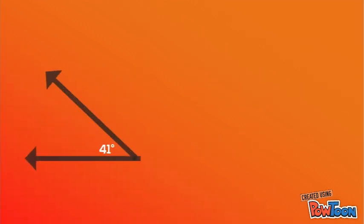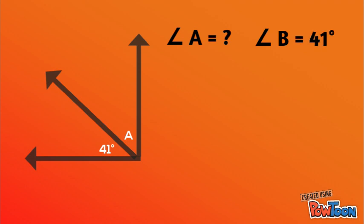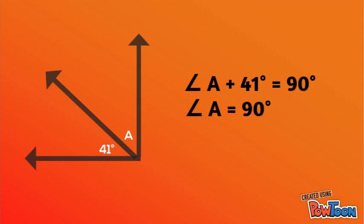Given these two angles, we're going to find the measure of angle A, where angle B measures 41 degrees. Using the formula for complementary angles, we substitute the value of angle B. So it becomes angle A plus 41 degrees equals 90 degrees. Applying the APE or addition property of equality, we transpose 41 degrees to the other side and subtract. So the answer is 49 degrees.